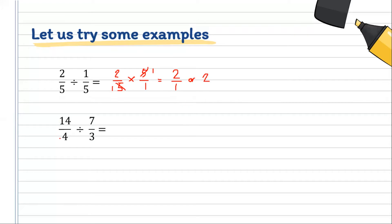Let's try another example: 14 over 4, divided by 7 over 4. So we copy the first fraction, 14 over 4. Then the division changes into multiplication, and the reciprocal of 7 over 4 is 4 over 7.